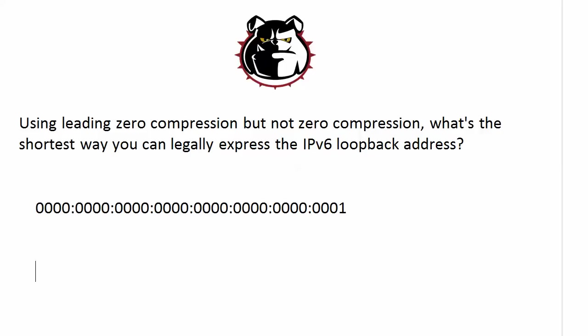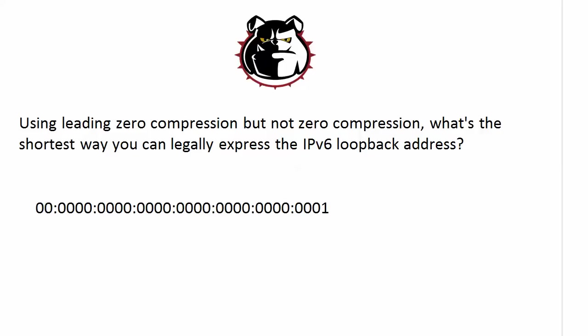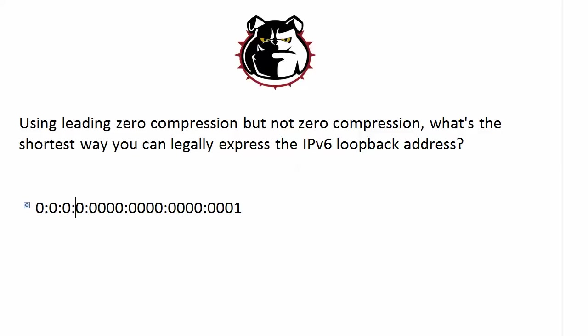We've thankfully got some more efficient ways to type that, especially if you don't like typing zeros. The way you'll generally see this expressed is its shortest possible form, which is just two colons and a one, and that's using zero compression. But the question said don't use zero compression — use leading zero compression. With leading zero compression, there's some good news and some bad news. The good news is you can perform leading zero compression as often as you like, whereas with zero compression you can only do it once per address. The only problem with leading zero compression is you have to leave at least one number in each field.